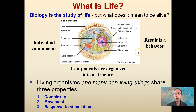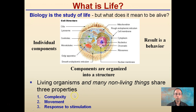These individual components are organized to result in a behavior. The Golgi apparatus, the lysosomes, the cytoplasm, and the cell membrane are just components alone, but all of these combined together result in a behavior. Living organisms and many non-living things share three properties: they're complex, they typically provide movement, and they respond to stimulation.